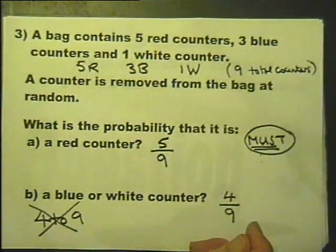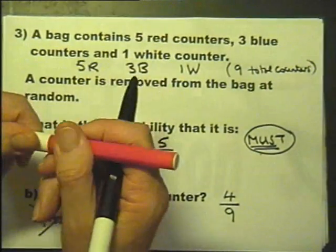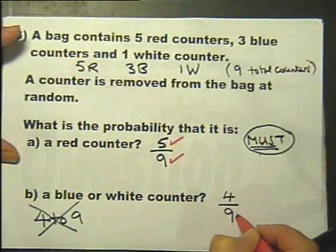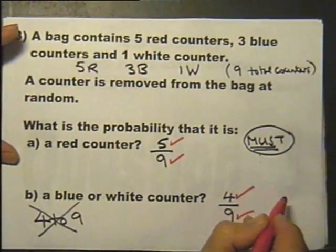So in fact there are four marks there. That's quite generous, isn't it? One mark for the bottom number, one mark for the top number, one mark for the bottom number, and one for the top number.